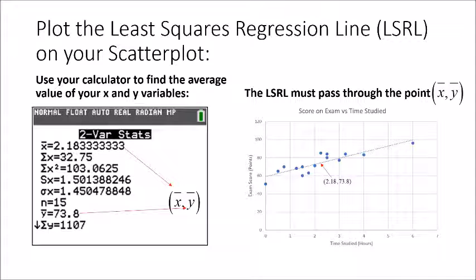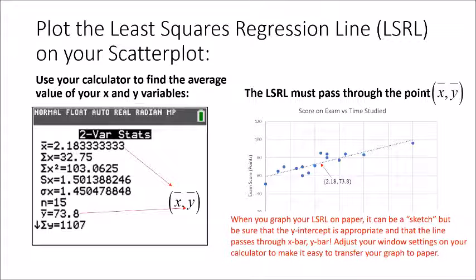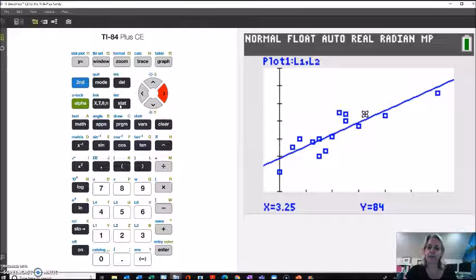So we have our equation. And now we're probably going to be asked to plot the equation of the regression line on our scatter plot. So again, you want to use your window settings on your calculator and adjust those as needed so it's easy to translate your graph from your calculator back to your paper. You always want to make sure that your line, the equation line, passes through the x bar, y bar. So to get those values, you can do stat, calc, two variable stats, and it will bring up both the basic statistics for your x list and your y list. And it gives you enough information there that you can get the x bar and y bar.